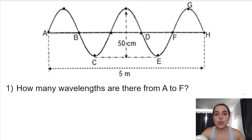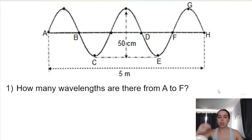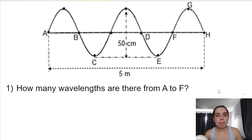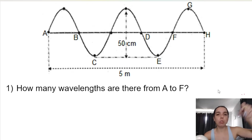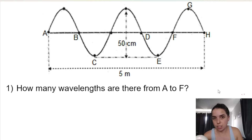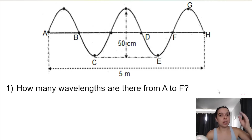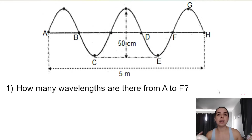The first question asks how many wavelengths — in other words how many waves — are there from A to F. Remember, finding how many wavelengths or how many full complete waves there are is all to do with points in phase. We find a wavelength by taking two successive points in phase, connecting them, and that gives us one wavelength.